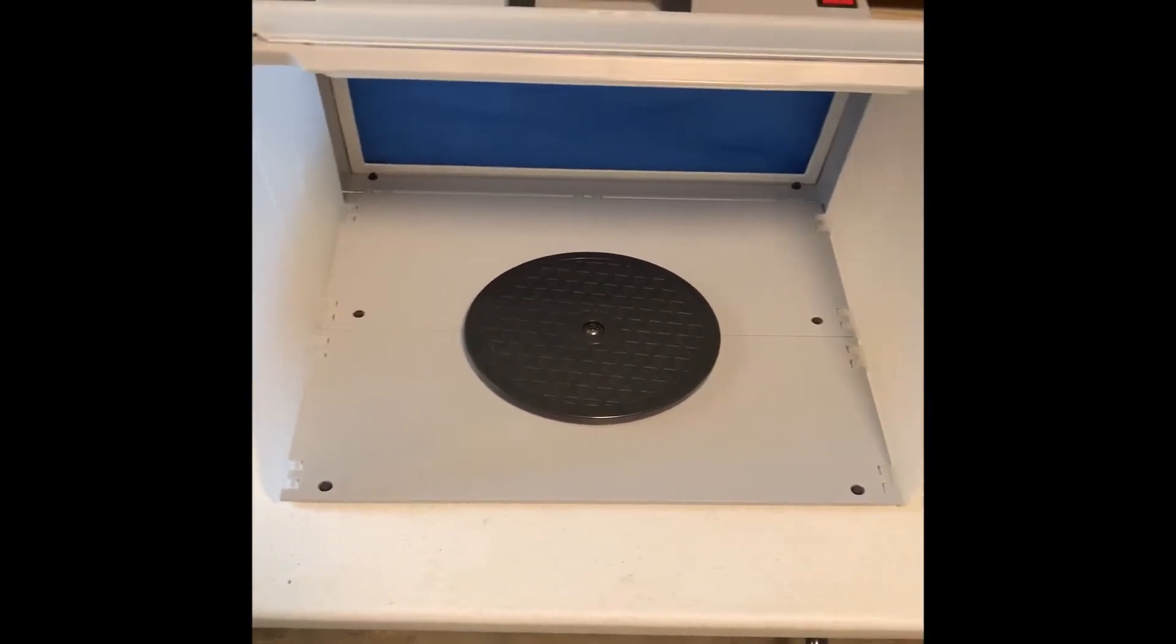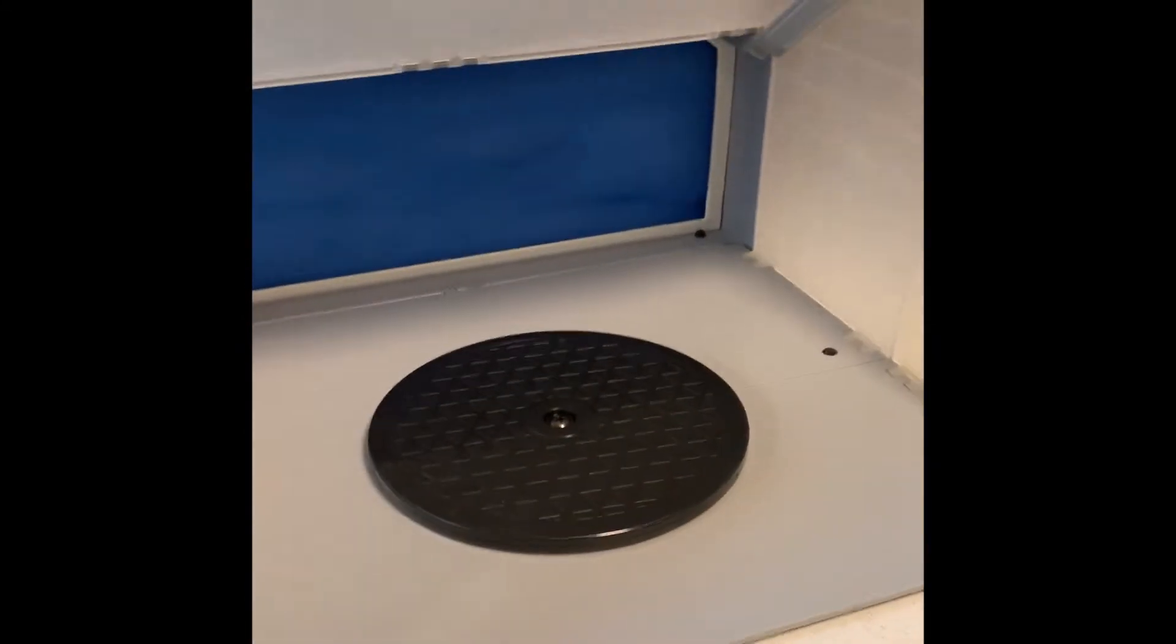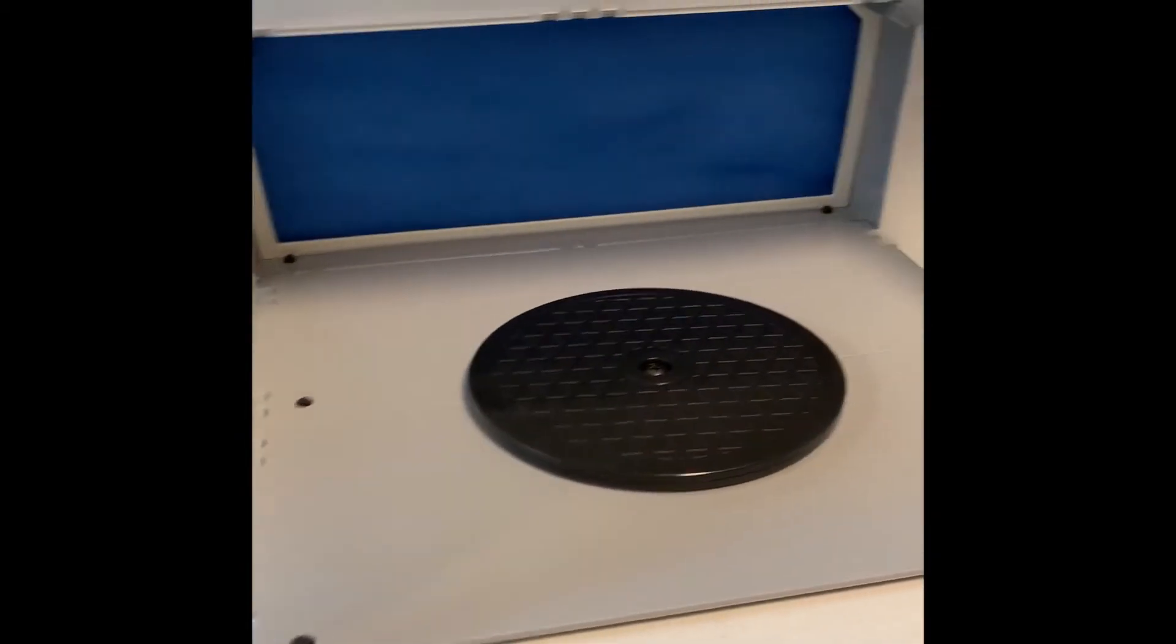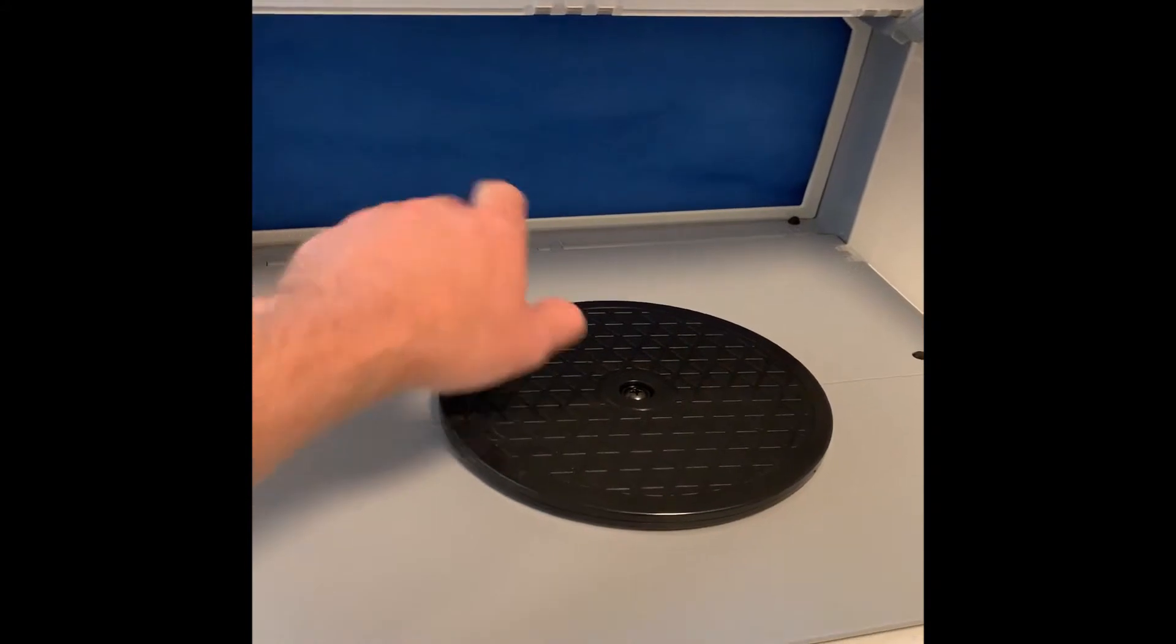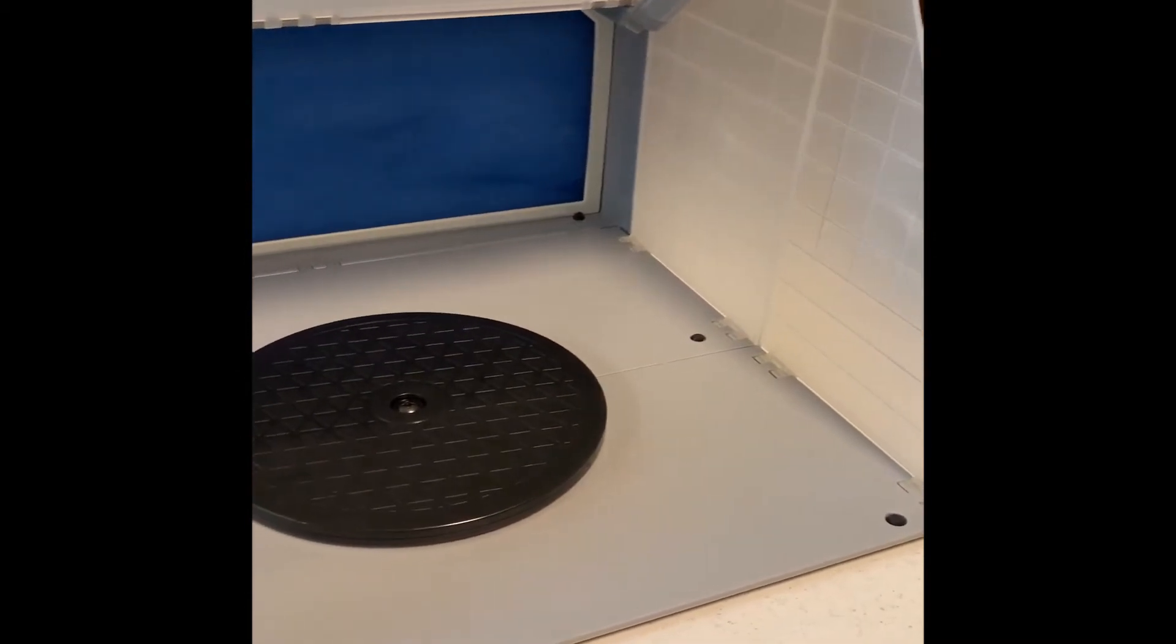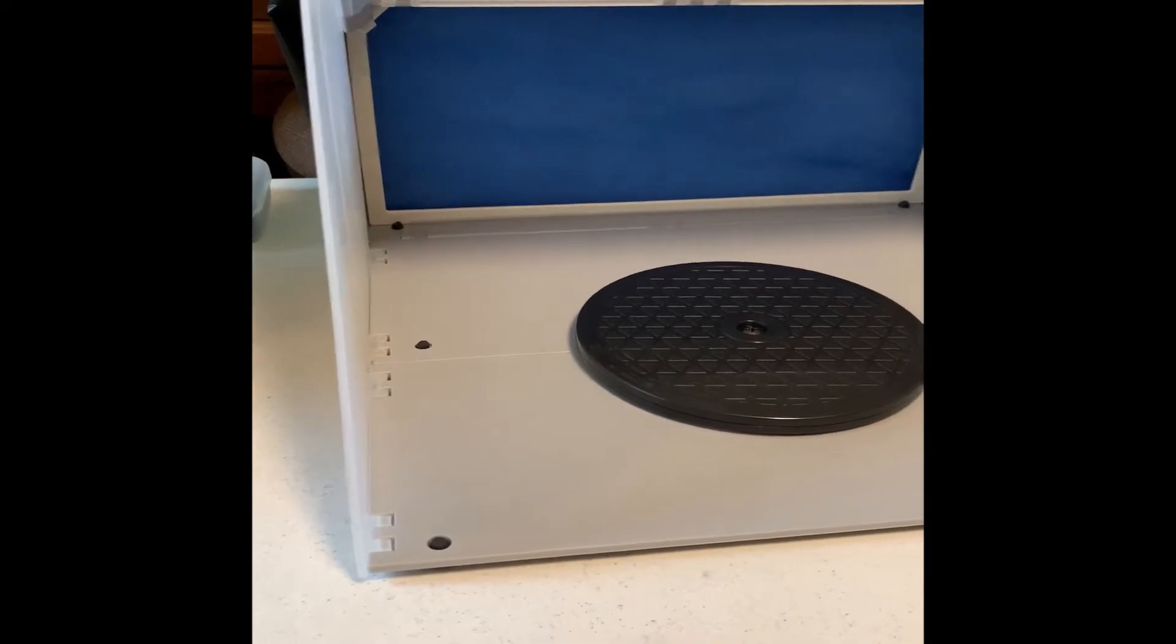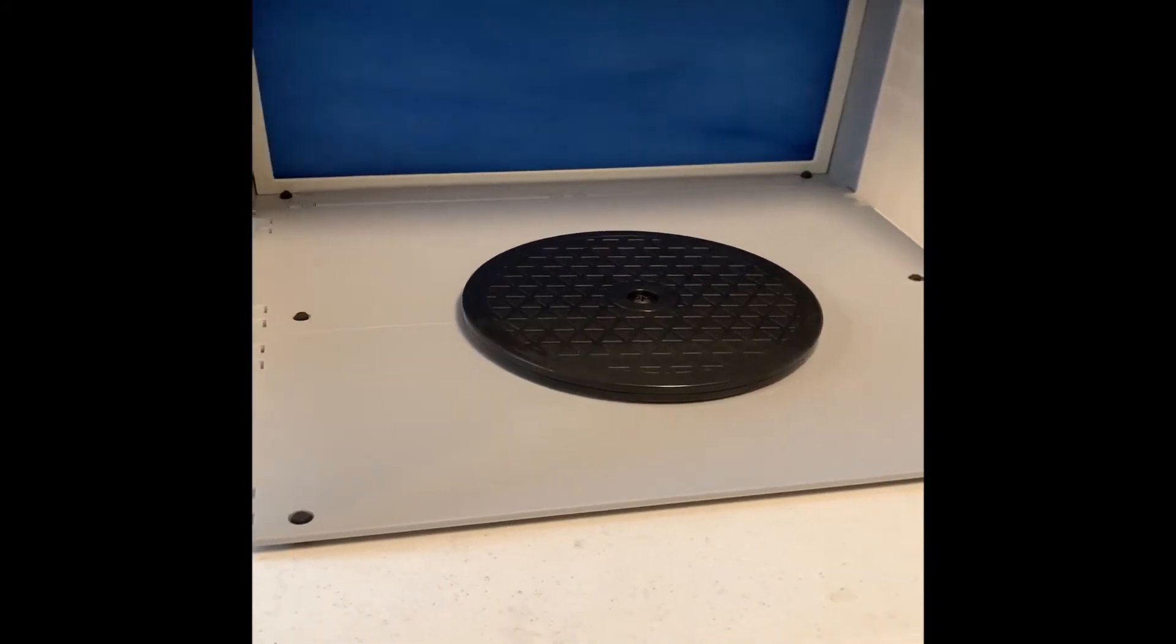What this product does is when you're airbrushing models or whatever you're spraying, that overspray and all the atomized paints and thinner are going to come out. This product is designed to suck it through that filter and out away from you and out of your breathing area. I really needed one of these because I have a cockatoo and cockatoos are extremely sensitive to chemicals or anything like that in the air. So I didn't want to cause her any harm. I wanted to make sure we have a good filtering system with that.